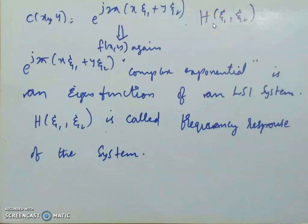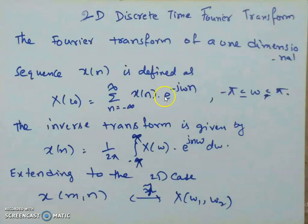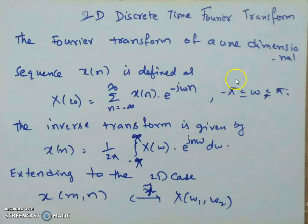H(ζ₁, ζ₂) is called the frequency response of the system and equals the Fourier transform of the impulse response. The magnitude |H(ζ₁, ζ₂)| is called the magnitude response and the phase of H(ζ₁, ζ₂) is called the phase response. Now let us move on to the discrete-time Fourier transform, which is the discrete version of the continuous-time Fourier transform. The Fourier transform of a 1D sequence x(n) is X(ω) = Σₙ₌₋∞^∞ x(n)·e^(−jωn). The range of ω is from −π to π, not −∞ to ∞, because ω is a normalized discrete frequency.